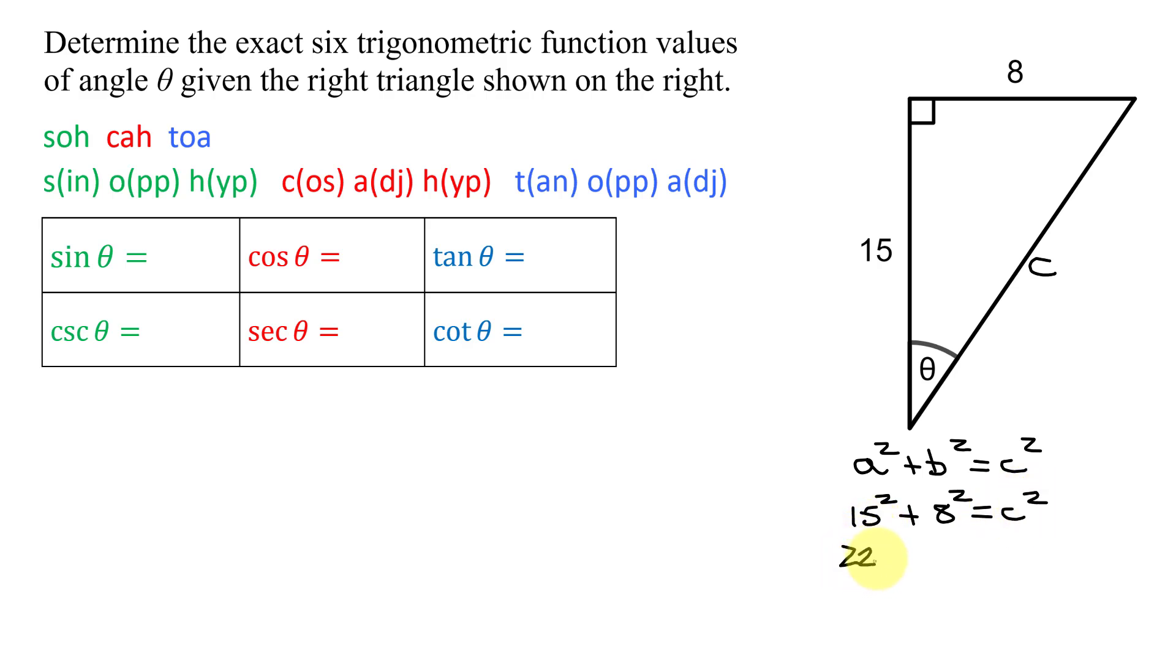15 squared is 225 plus 8 squared is 64 equals C squared. So C squared equals 225 plus 64 is 289.